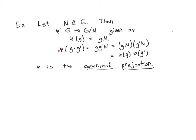Here's the proof that it is a homomorphism. Given two group elements g and g prime, phi of g times g prime by definition is the coset of g times g prime. By definition of multiplication of cosets, that is the product of the cosets gN and g'N. We see this is the image phi of g times phi of g prime, so the multiplication operation is preserved and phi is a homomorphism.